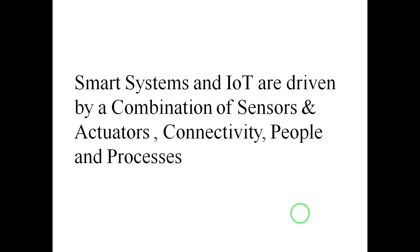Smart systems and IoT are basically driven by a combination of sensors, actuators, connectivity, people and process. Sensors and actuators are the actual source of data — sensors will be on the input side and actuators on the output side. The very basic sensor types include temperature sensors, humidity, moisture sensors, acoustic sensors, and various gas sensing sensors.